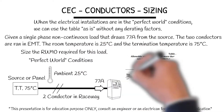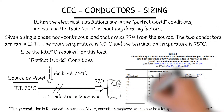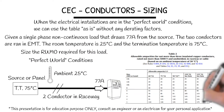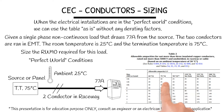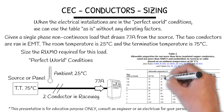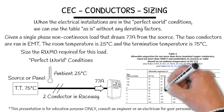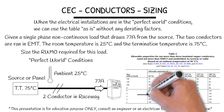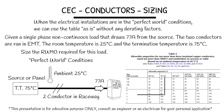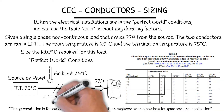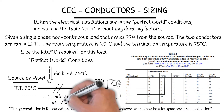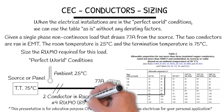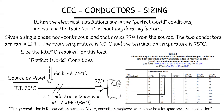Let's look at Table 2. We can go down the 75 degree column. Where does 77 amps fit? It fits on the 85 amp capacity. Therefore, we need a number 4, good for 85 amps.